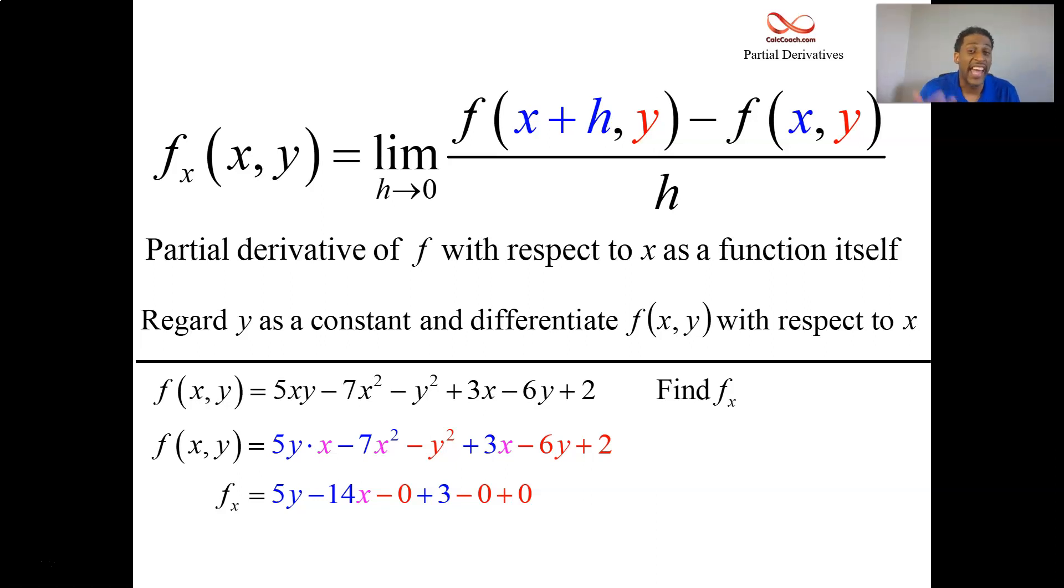If your function doesn't have any x's in it and you're taking the x partial, its derivative is 0. There's three terms there that have no x's in them at all. They're not changing with respect to x. They're constant. Derivative is 0.